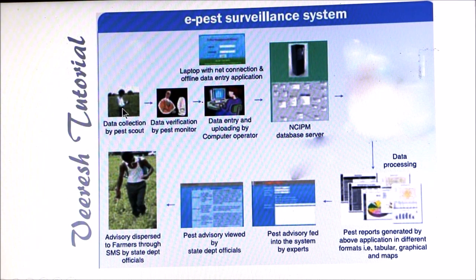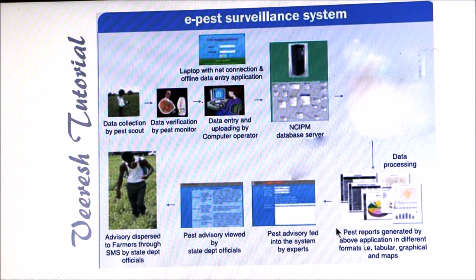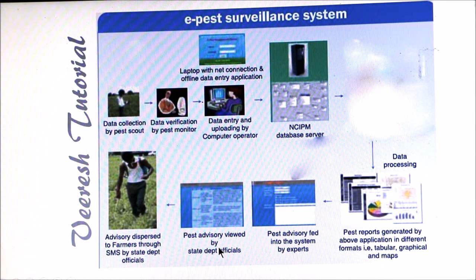In the e-pest surveillance system, data is collected by the pest scout in the field and sent to the pest monitor for verification. The same data is then uploaded to the computer by a computer operator and entered into a database. The processed data is verified by experts, who then feed pest advisory into the system. This advisory is viewed by state department officials and then dispersed to farmers through SMS.